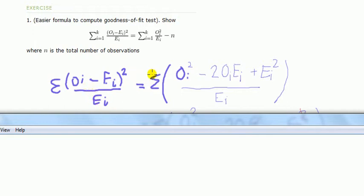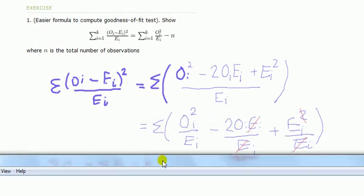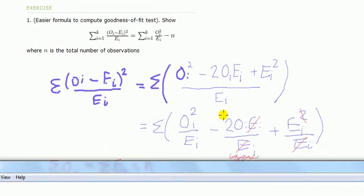The obvious thing to do: expand out the brackets, the squared term there, like this. And then next, divide this into the three fractions, like so.